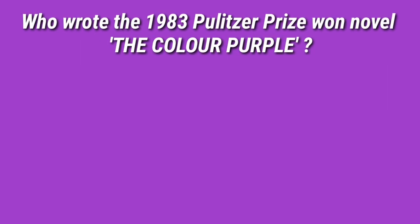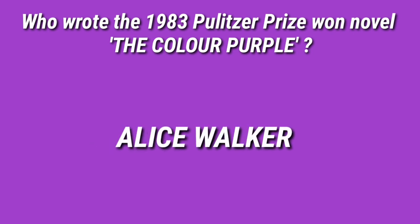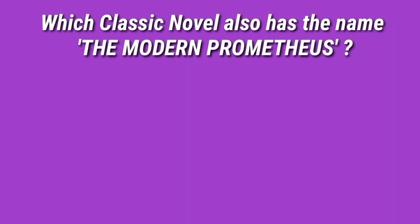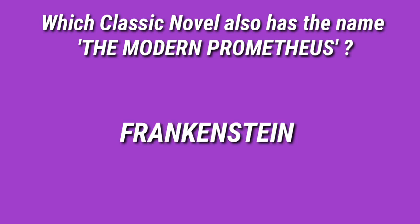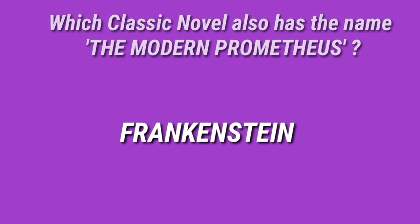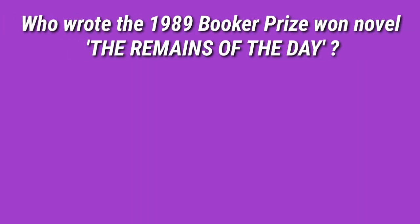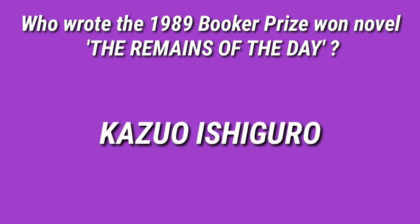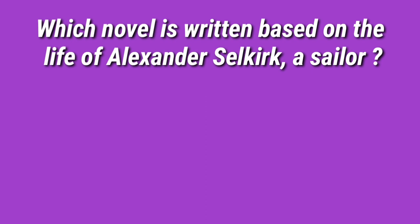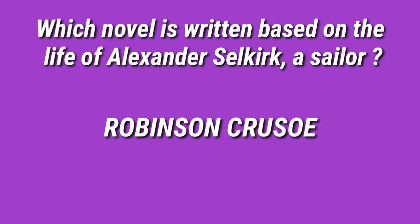Who wrote the 1983 Pulitzer Prize-winning novel The Color Purple? The answer is Alice Walker. Which classic novel also has the name The Modern Prometheus? The answer is Frankenstein. Who wrote the 1989 Booker Prize-winning novel The Remains of the Day? The answer is Kazuo Ishiguro. Which novel is written based on the life of Alexander Selkirk, a sailor? The answer is Robinson Crusoe.